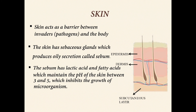Anatomic barrier — skin: the skin acts as a barrier between invaders (pathogens) and the body. The skin has sebaceous glands which produce an oily secretion called sebum. Sebum contains lactic acid and fatty acids which maintain the pH of the skin between 3 and 5, thereby inhibiting the growth of microorganisms.